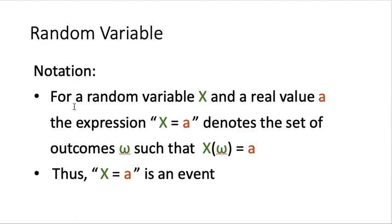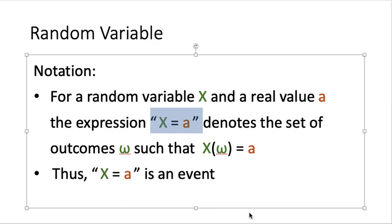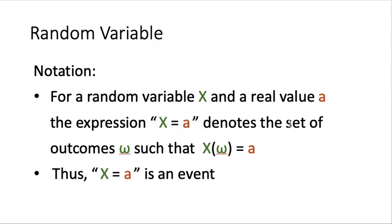Next, we want to introduce a special notation. Given a random variable X and a certain real value a, we use the expression {X = a} to represent a set of outcomes — specifically, those outcomes such that the X value of the outcome is equal to a. Because it is a subset of the sample space, {X = a} is actually an event.